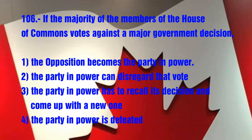Question No. 106. If the majority of the members of the House of Commons votes against a major government decision: 1. The opposition becomes the party in power, 2. The party in power can disregard that vote, 3. The party in power has to recall its decision and come up with a new one, 4. The party in power is defeated. The answer is 4. The party in power is defeated.